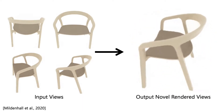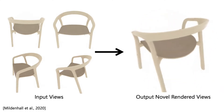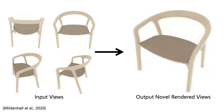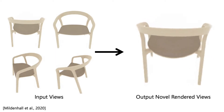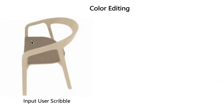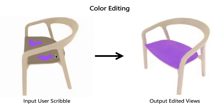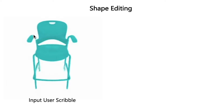As with any other former digital imagery, we may want to make changes to the visual appearance of the novel views. We seek to allow a user to change the color and shape of an object, and have those changes appear in novel viewpoints.